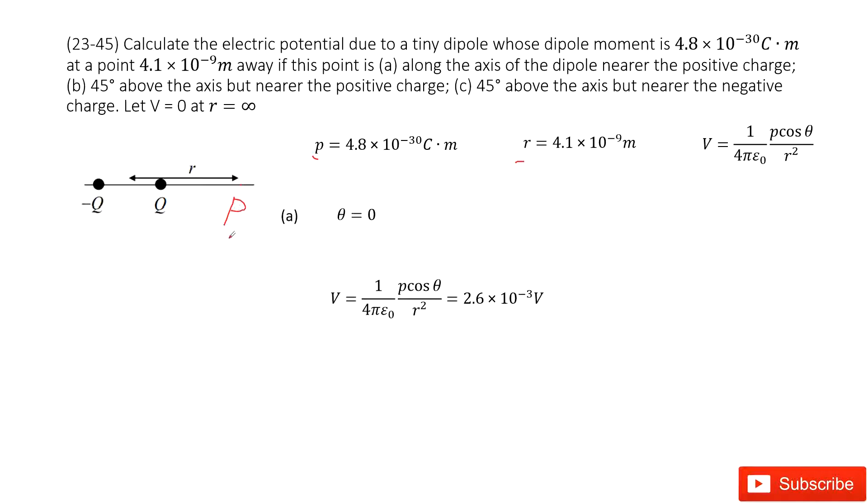We can write down the potential function for a dipole, which looks like this. You can see it has a quantity theta. In this case, theta is zero because P is along the x-axis. Now we input all the given quantities: dipole momentum, theta, and R, and we get the answer.